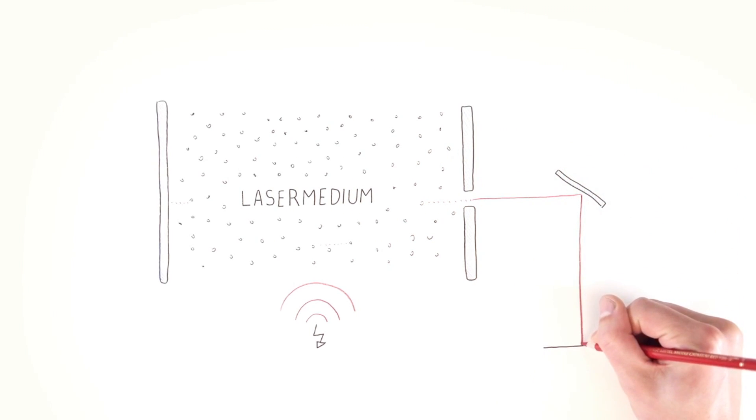The beam can leave the laser through the partially transmissive mirror, and is directed onto the material where it engraves, marks, or cuts the desired motif.